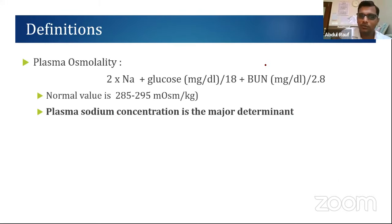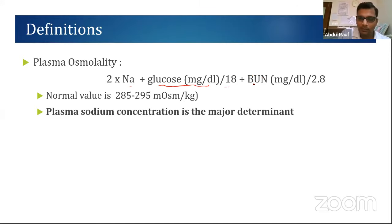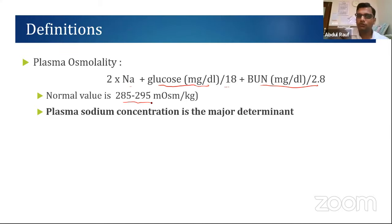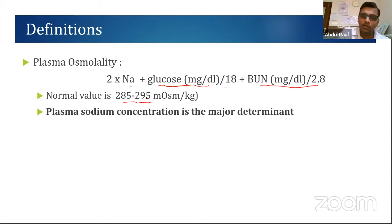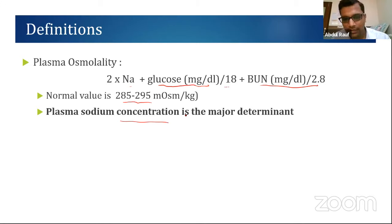Plasma osmolality is calculated by the formula: 2 × sodium + glucose (mg/dL)/18 + BUN/2.8. The normal value is 285 to 295. The normal sodium value is around 140, so 2 × 140 = 280. Out of a total of 290, 280 is contributed by sodium — making sodium the major determinant of plasma osmolality.